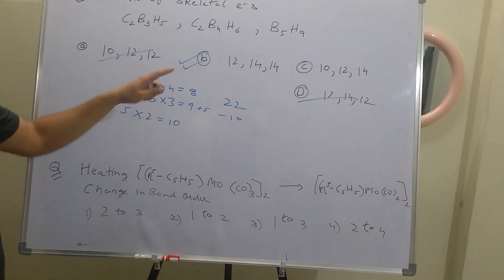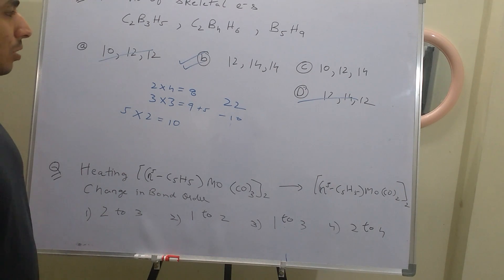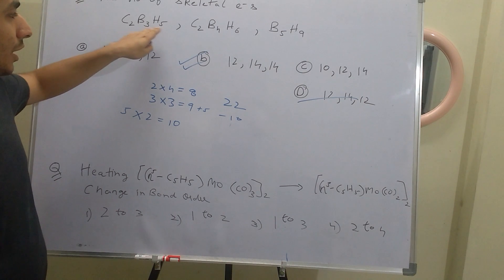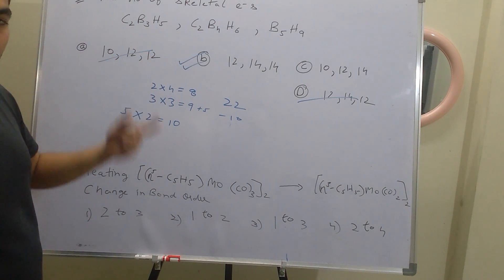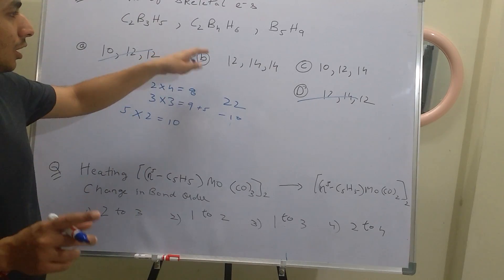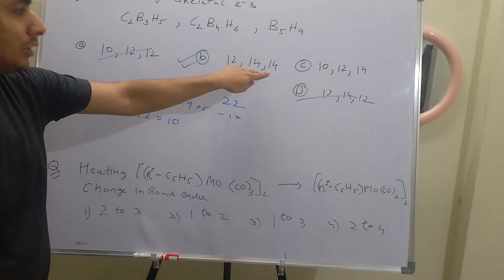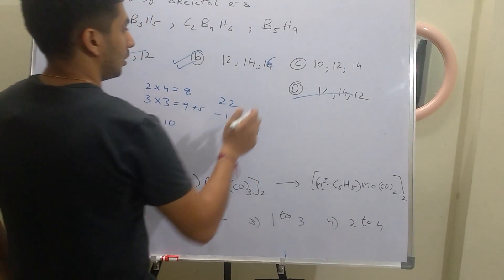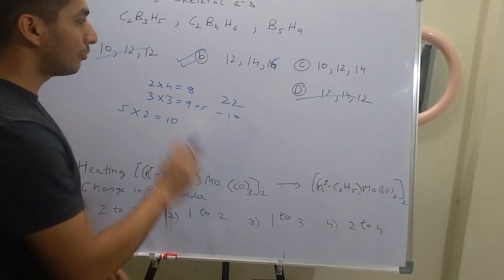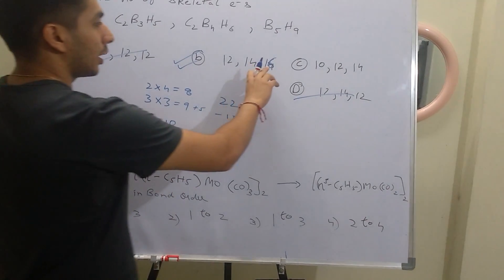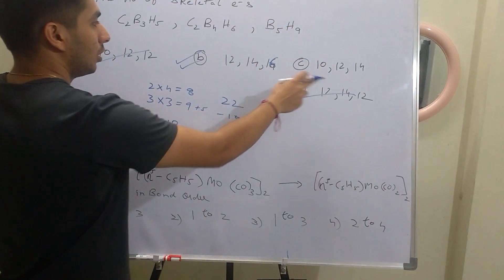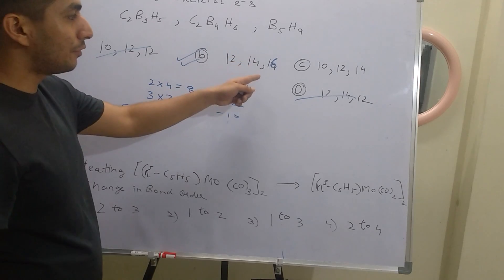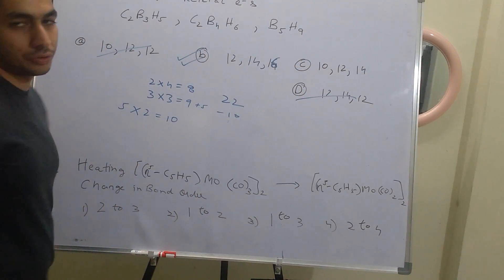That's why identifying the options is very important. If solving the third compound gives a value that appears in only one option, you directly get the answer. For example, if only one option had 14, you'd be done immediately. Always look at the options first and find out whether solving just one of the sub-parts gives you the answer — then go for that particular solution to save time.